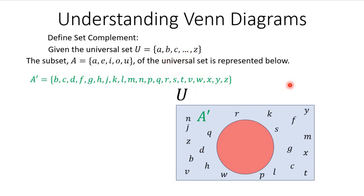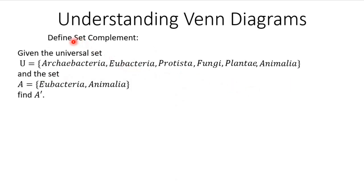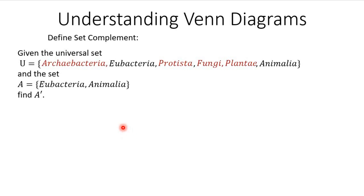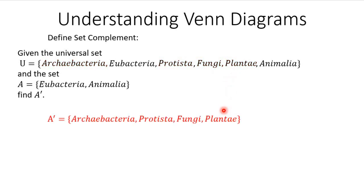Here the universal set consists of all the kingdoms in biology — the animal kingdom, the plant kingdom, fungus, protista, and so forth. There is a subset A containing two of those kingdoms. The complement of set A contains every element that's not in set A — so it's the remaining kingdoms not included in the subset. That's everything in the universal set that's not in set A.